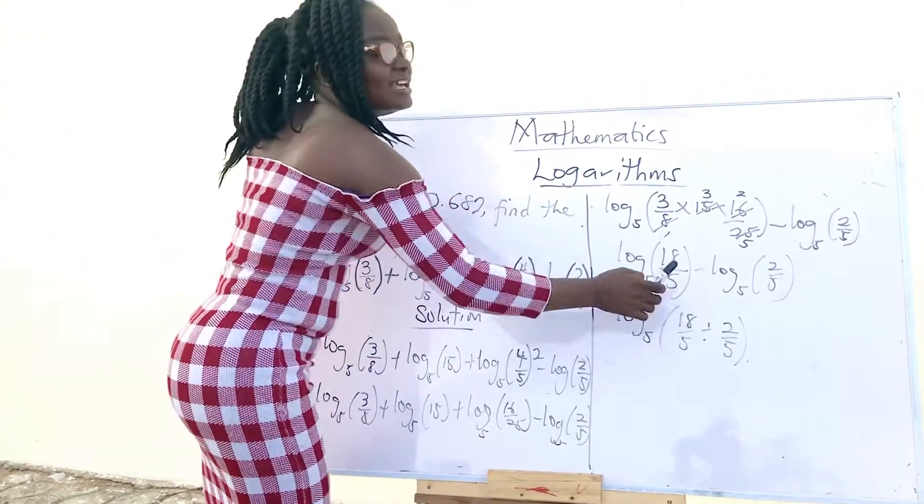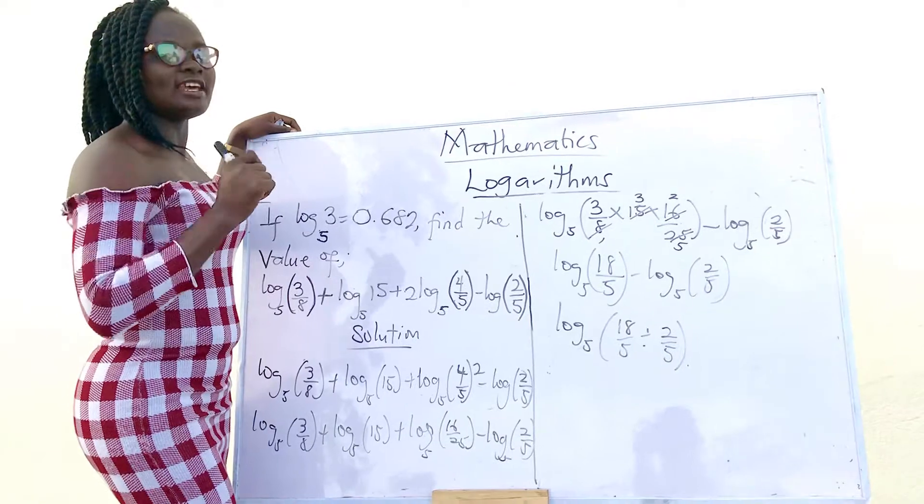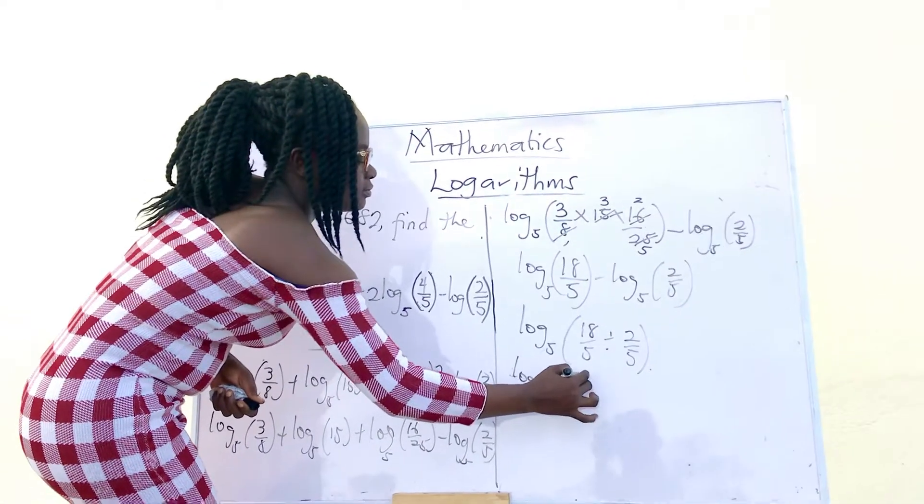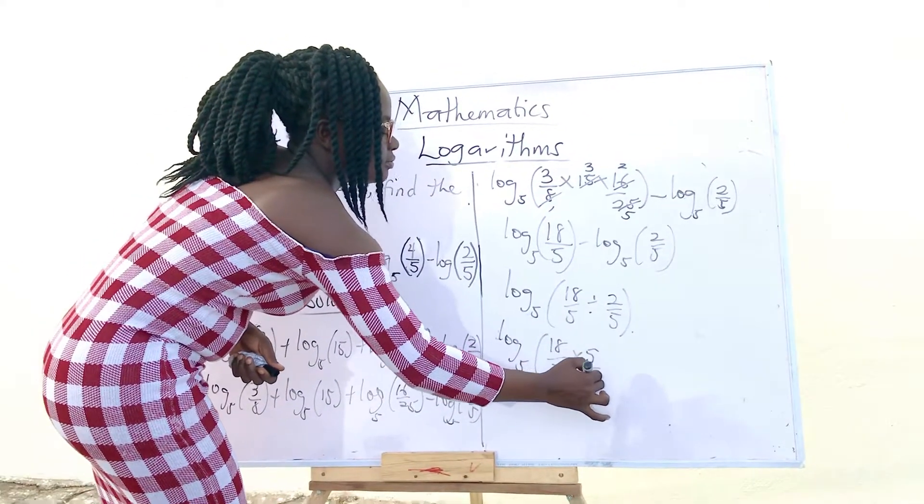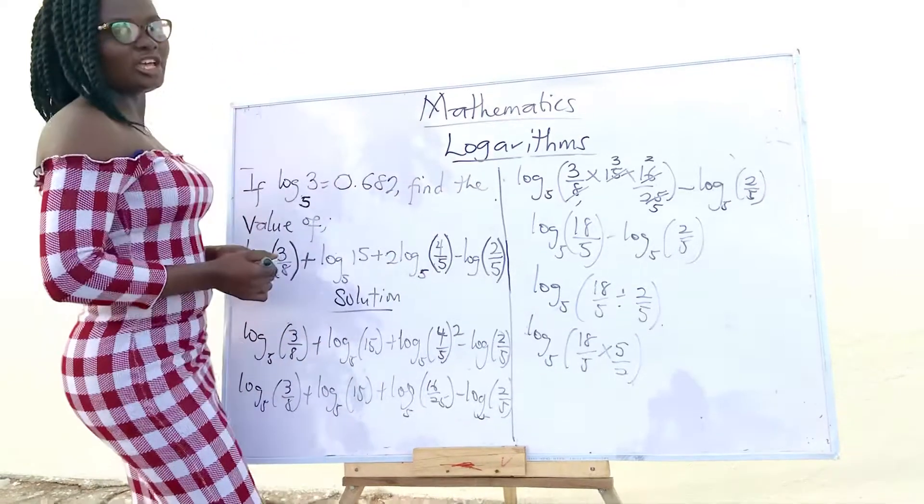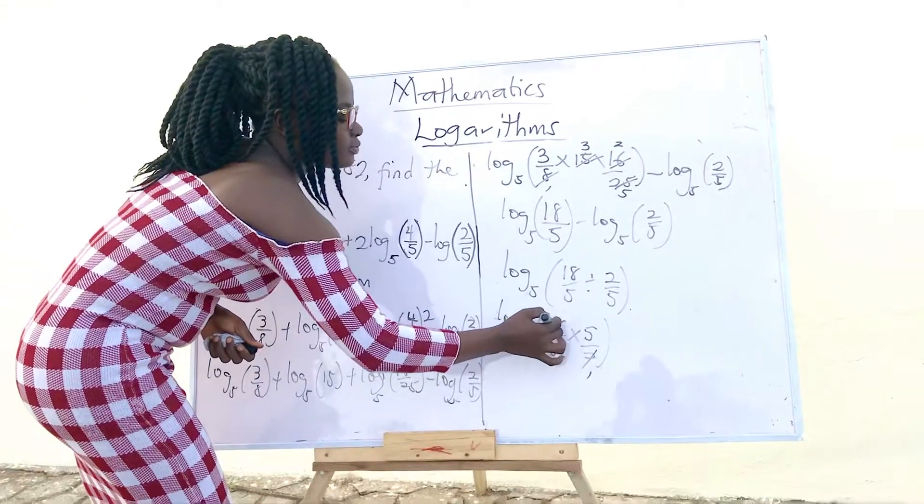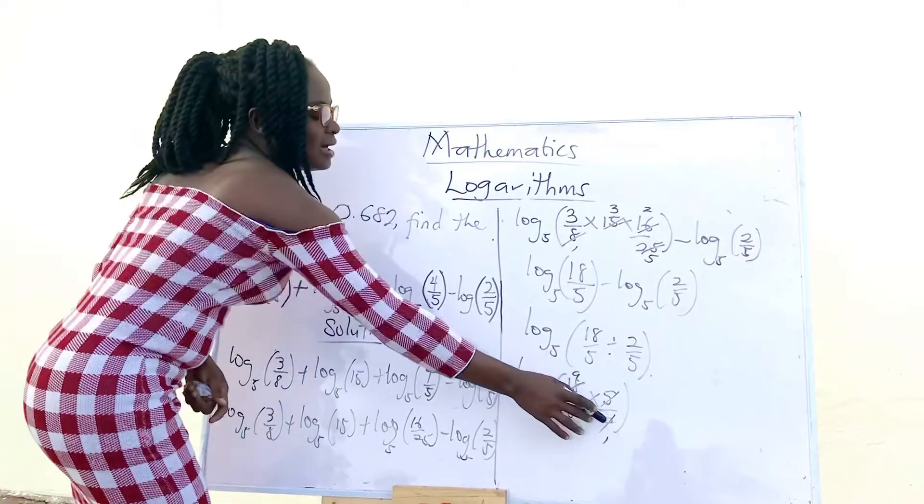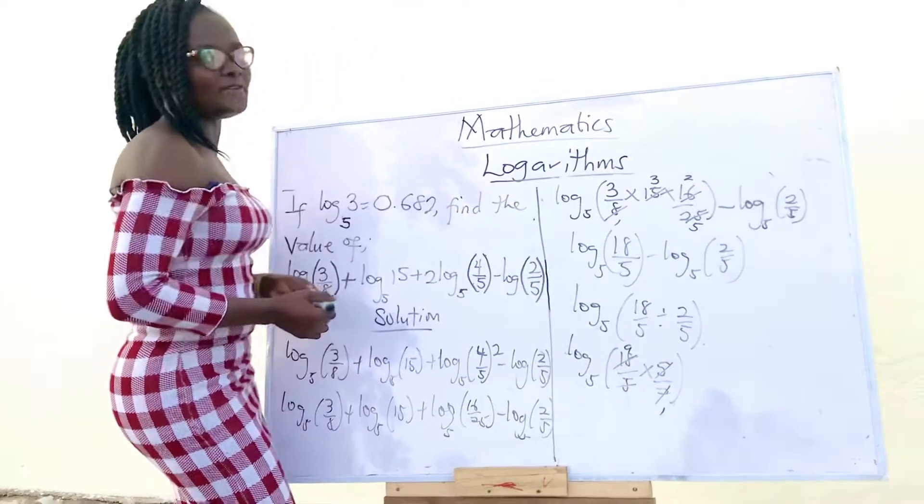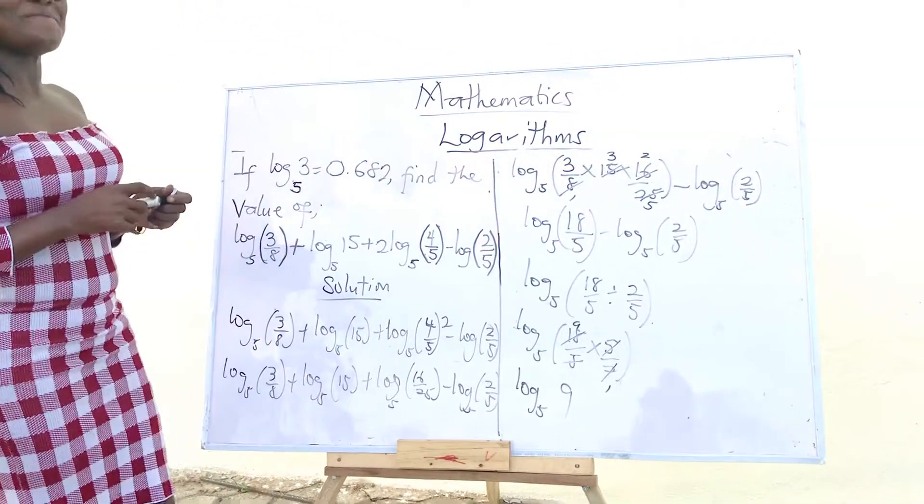Since this fraction is dividing, we have to change it to multiplication and reciprocate the side of the fraction. The moment you reciprocate this type of the fraction, you change the sign from division to multiplication. Then, simplify it. 2 can go into 18 nine times and 5 can cancel out 5. So, this will in turn give us log 9 base 5.